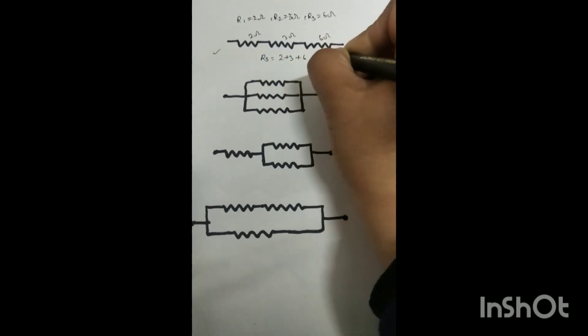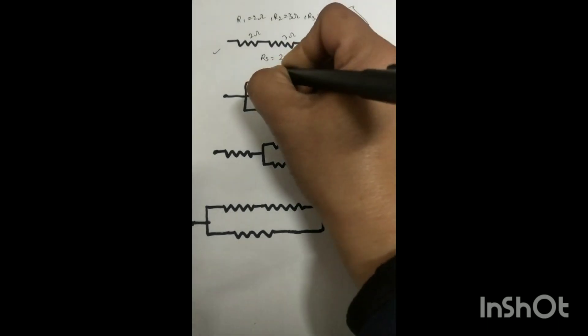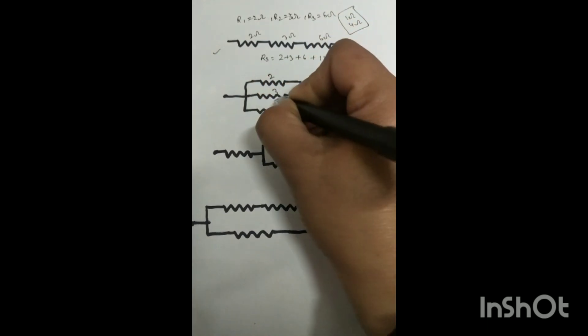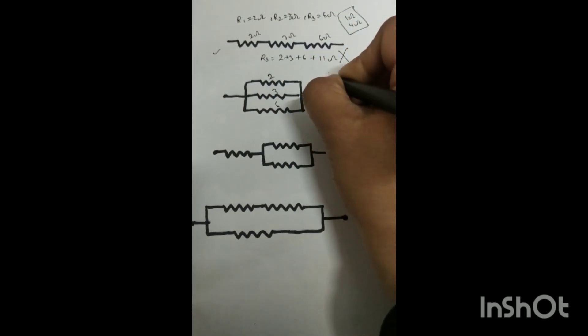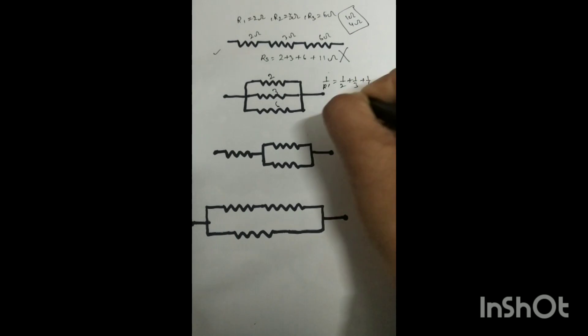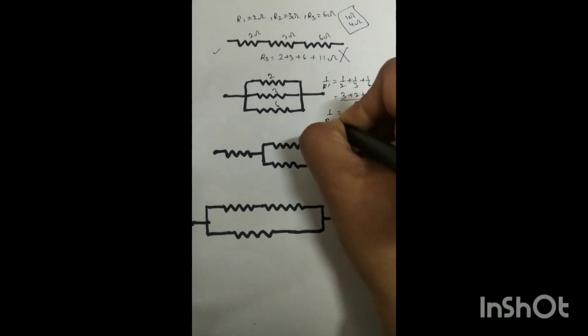That means 2 + 3 + 6 which is 11 ohm, but what do we need? This is the parallel arrangement: 1/R = 1/R1 + 1/R2 + 1/R3. So we have to put 1/2, 1/3, 1/6. The LCM is 6, so we will solve this: (3 + 2 + 1)/6 = 6/6. So 1/R = 1, giving R = 1 ohm.